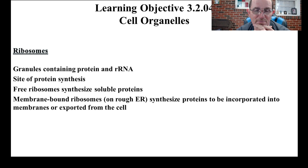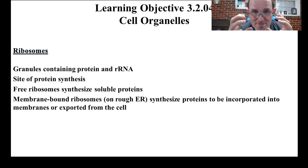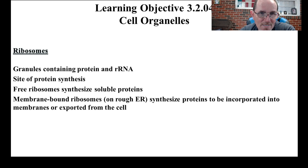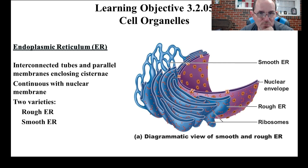Ribosomes — we've already talked about those. Those are made of protein and also part of them is made of a special type of RNA called ribosomal RNA. This is the place where proteins are linked together — where we take those amino acids and link them together. We've got ribosomes that are free in the cytoplasm taking care of internal protein synthesis, and then the rough ER ribosomes for export. We already talked about that.